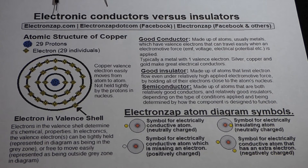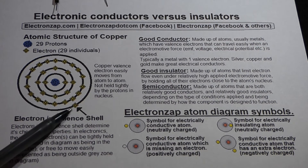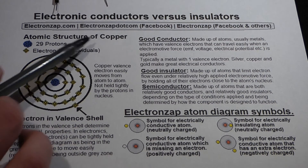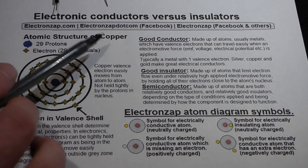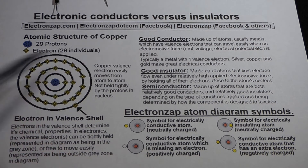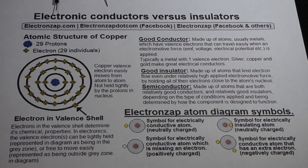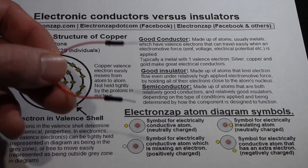This is ultimately what makes a good conductor. Copper is a good conductor, and so are gold and silver — they're actually better conductors than copper, but of course they're a lot more expensive.